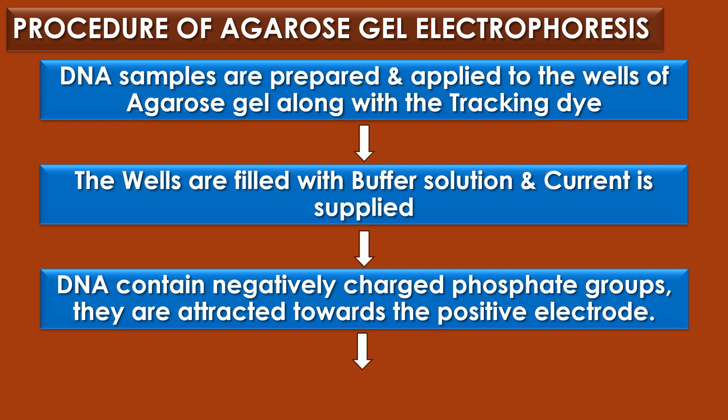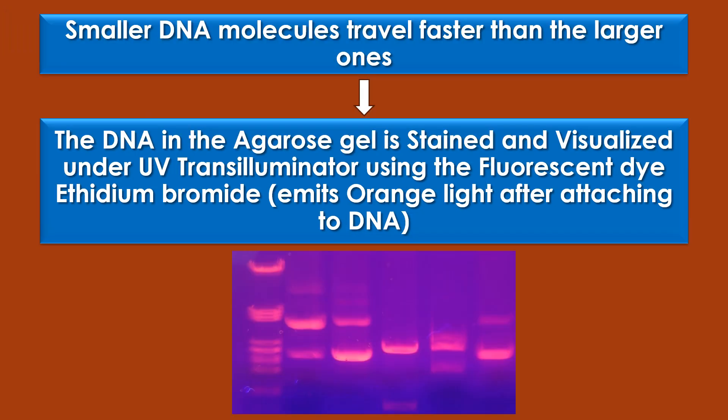Procedure of agarose gel electrophoresis. DNA samples are prepared and applied to the wells of the agarose gel along with the tracking dye. The wells are filled with buffer solution and the electric current is supplied. As DNA contains negatively charged phosphate groups, they are attracted towards the positive electrode. Smaller DNA molecules travel faster than the larger ones. The DNA in the agarose gel is stained and visualized under a UV transilluminator using the fluorescent dye ethidium bromide, which emits orange light after attaching to DNA.